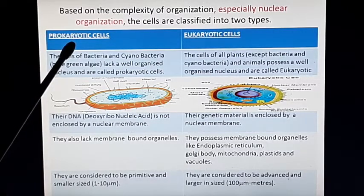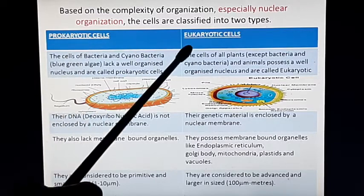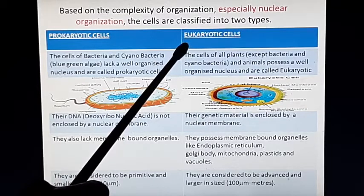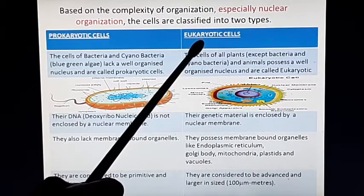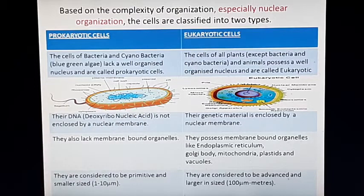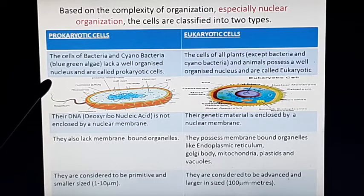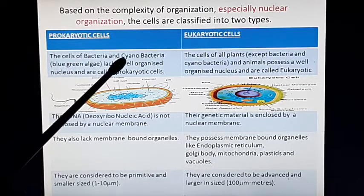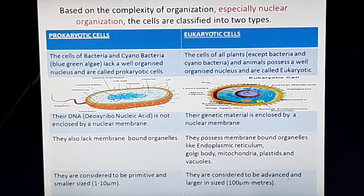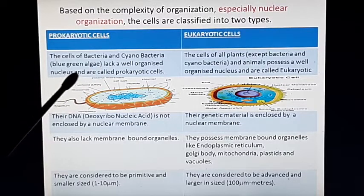'Pro' means primitive and 'karyotic' means nucleus. Cells with primitive nuclear organization are called prokaryotic cells. 'Eu' means advanced, so cells with an advanced type of nuclear organization are called eukaryotic cells. The best example of a prokaryotic cell is bacteria or cyanobacteria, also known as blue-green algae. Prokaryotic cells lack a well-organized nucleus.